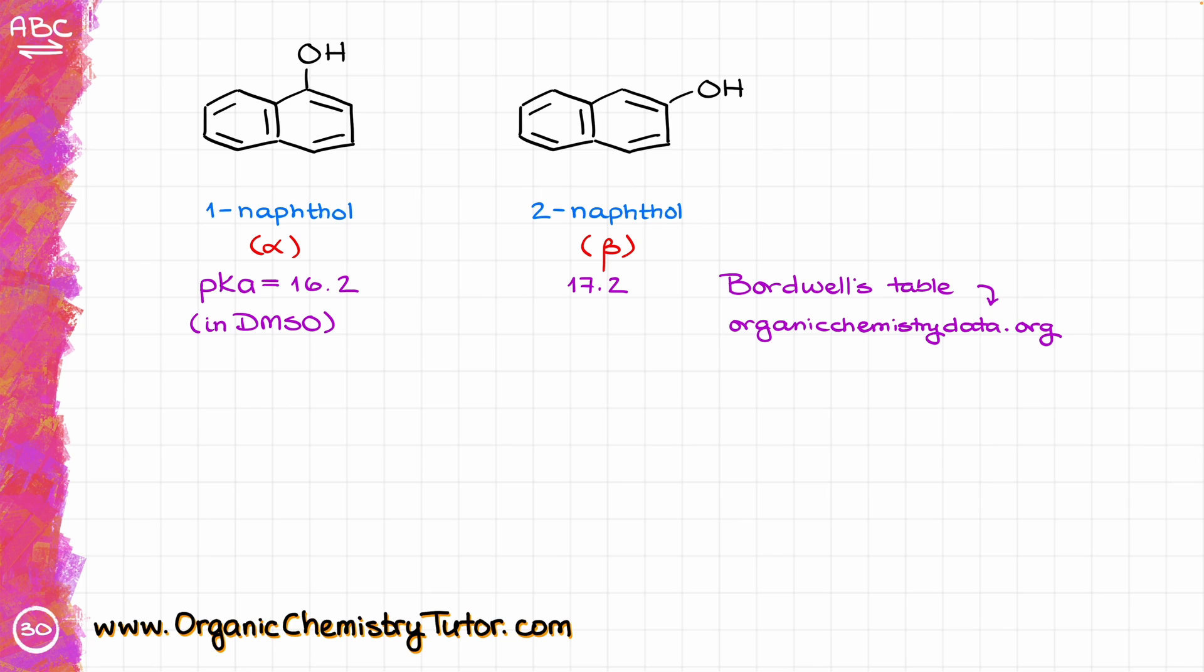the pKa values for 1-naphthol and 2-naphthol are 16.2 and 17.2 in DMSO, correspondingly. The fact that the pKa values were measured in DMSO rather than in water, as usual, is not very relevant for our purposes. While the numbers themselves would, of course, be different from those measured in water, the trends in acidity do not change based on the solvent, as long as the solvent is chemically neutral. And DMSO is a very common standard for the pKa measurements for specifically those compounds that do not easily dissolve in water. And naphthols don't dissolve in water very well.